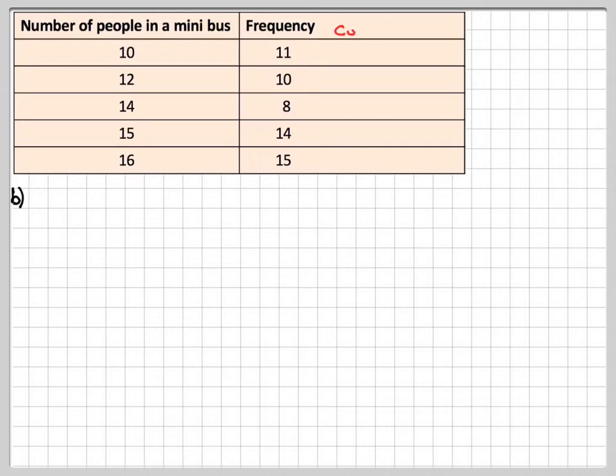For the median, we have to do this thing called cumulative frequency. So the frequencies up to this point is 11, the frequencies up to this point are 11 plus 10, and then we need to add 8 to 21 to get 29, 29 plus 14 which is 43, 43 plus 15, which gives me 58.